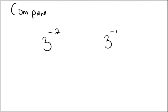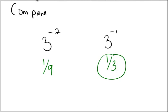Let's try comparing these ones now: 3 to the power of negative 2 and 3 to the power of negative 1. Same quantity on the left-hand side — 3 squared is 9, and the negative exponent means instead of writing 9, we write 1 ninth. On the right-hand side, we have 3 to the power of 1, which would normally be 3, but due to the negative exponent we take the reciprocal and make that 1 third. 1 ninth is smaller than 1 third, so the correct symbol is the less-than symbol.